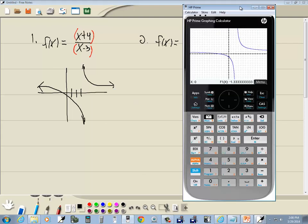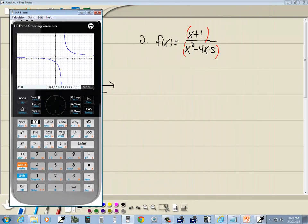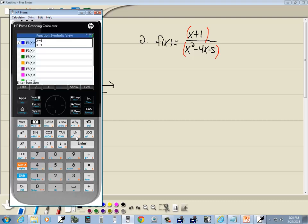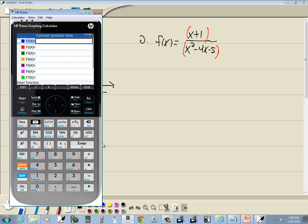I'll press my symbol, then backspace. Then we'll do our parentheses and x plus 1. Right arrow to get out of the parentheses, then divide by. I'll put parentheses around the bottom part and do x squared minus 4x minus 5. Then press enter.